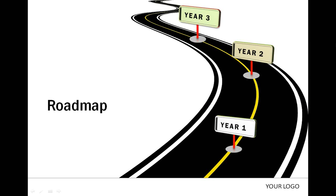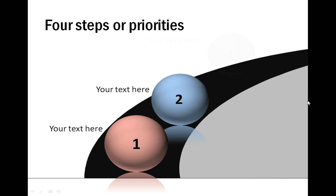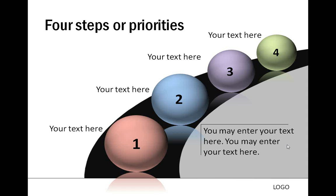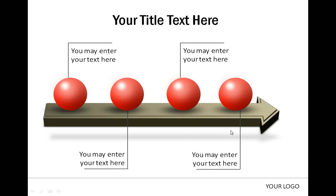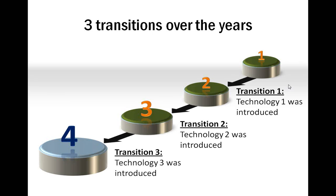In this diagram template we used a curved roadmap to add visual interest to the business slide. The next template uses a curved path with 3D spheres of different colors and sizes to mark various events, with text explaining the diagram. In another template we used a 3D arrow with 4 glossy balls to mark events along the roadmap. In this elegant template we used 3D disks of different colors with text on top, showing 3 stages of transition along the roadmap.